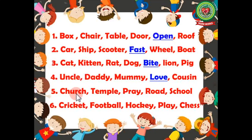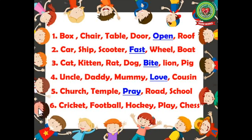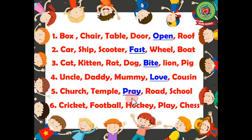Number five: church, temple, pray, road, school. Let's check the answer. The answer is 'pray', as church, temple, road, and school are names of places, so they are nouns. But 'pray' is not a naming word, so we will underline it.